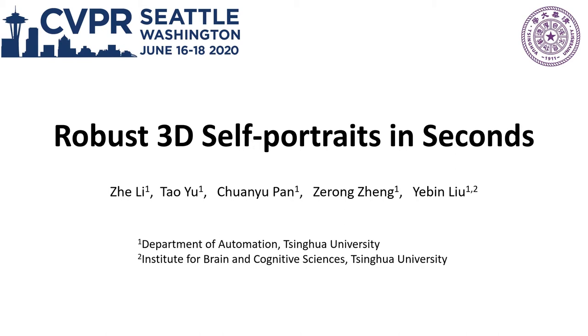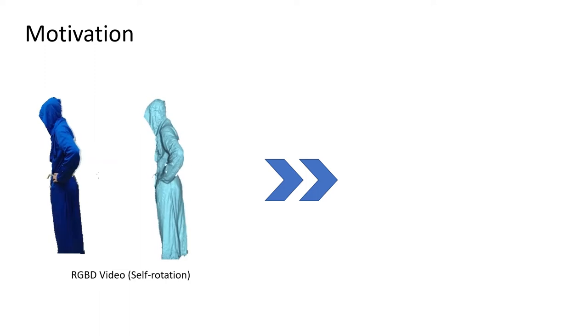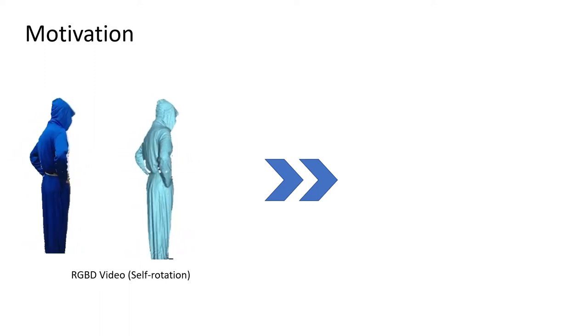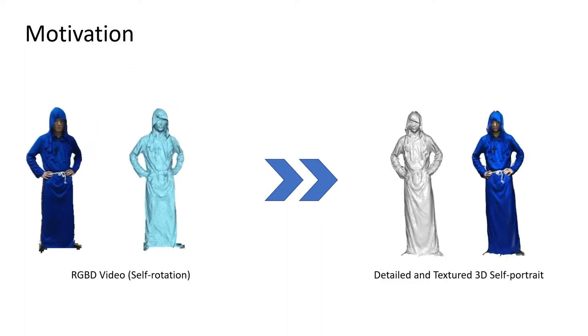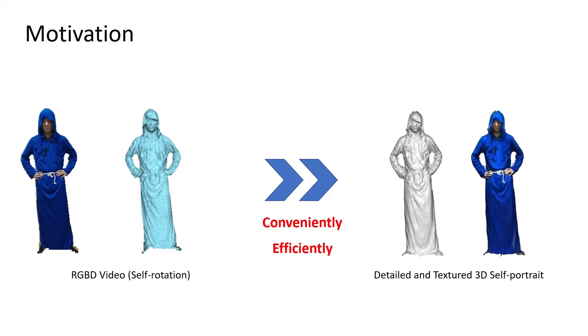We propose an efficient method for 3D self-portraits using a single RGBD camera. The input is a single-view RGBD video, in which the performer wearing loose clothes only needs to self-rotate a circle. We want to reconstruct a detailed and textured 3D self-portrait conveniently and efficiently, and can handle general clothes.